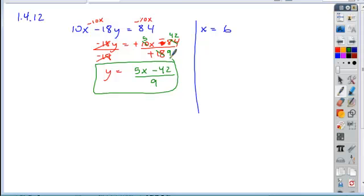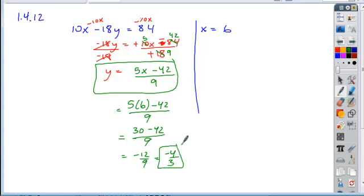And then if we were substituting in 6 for x, we just plug that into this expression and solve. We get 30 minus 42, which is negative 12 over 9. We can reduce this fraction. 3 goes into 12 four times, 3 goes into 9 three times. So we wind up with negative 4 thirds as our solution.